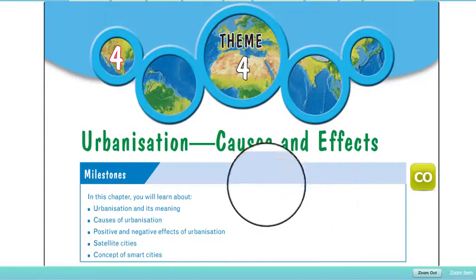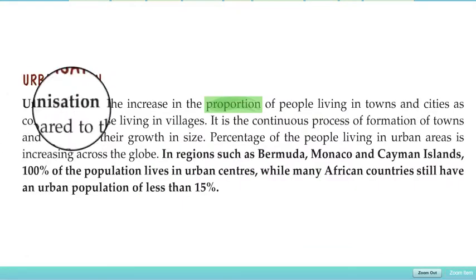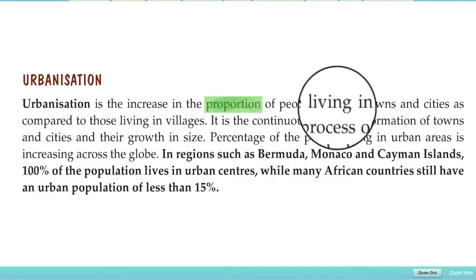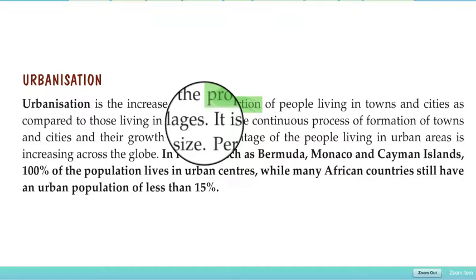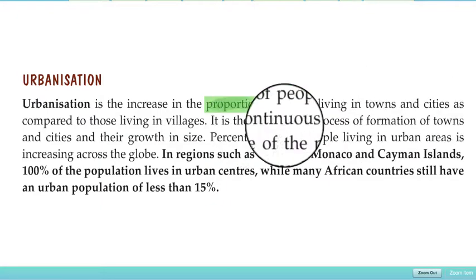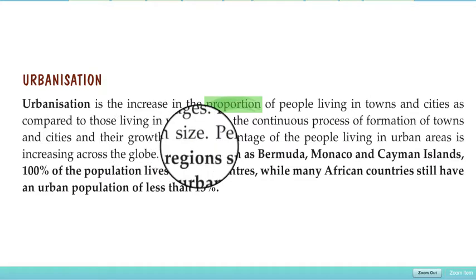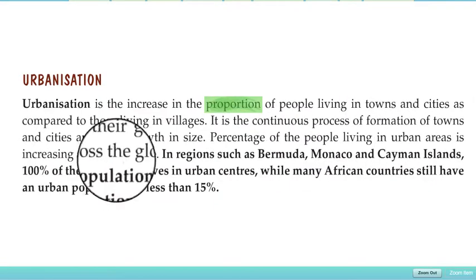Today our topic is urbanization. Urbanization is the increase in the proportion of people living in towns and cities as compared to those living in villages. It is a process in which the number of towns and cities are increasing — a continuous process of formation of towns and cities and their growth in size, with the percentage of people living in urban areas increasing across the globe.